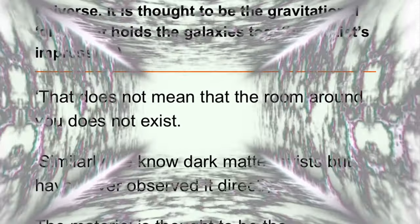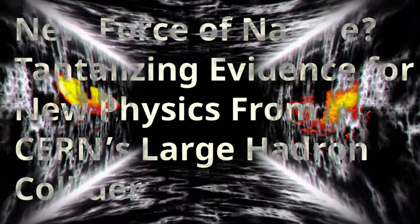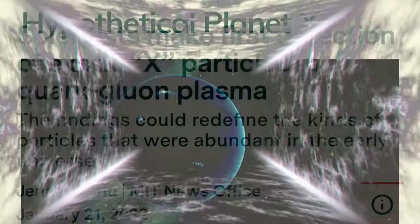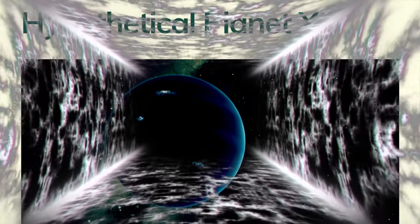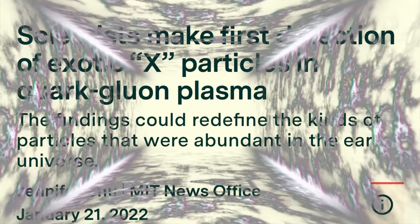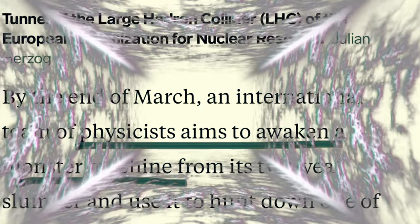No one knows what dark matter is or if it even exists. For now, it's just a placeholder, an X. If you notice, there's X's everywhere right now, there's Planet X that nobody talks about, but I've been noticing there's X everywhere. So they're talking about this X that must be plugged into various calculations in order to square astronomical observations with the rules of Newtonian physics.